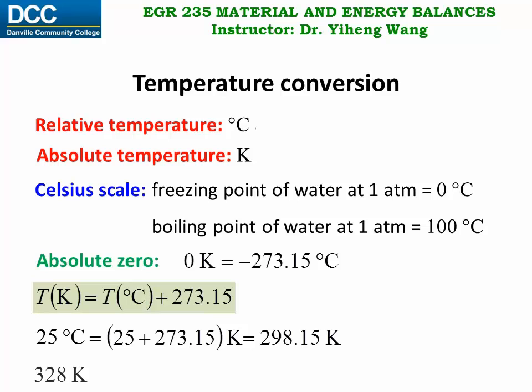Or for a temperature of 328 Kelvin, if we want to convert it into degree Celsius, we take 328 minus 273.15 and get 54.85 degrees Celsius.